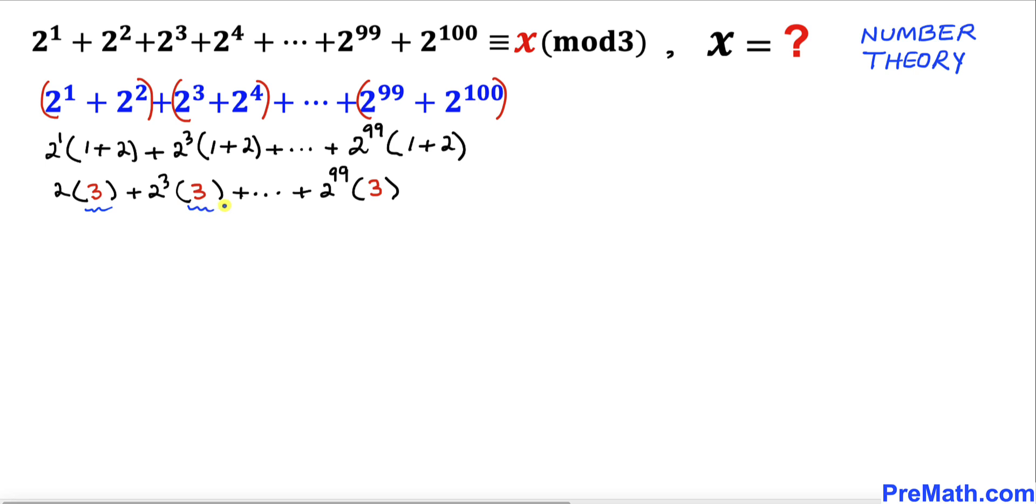Now we can see that this 3, this 3, and all the way this 3 is in common among all these terms. Therefore I am going to factor out 3, and inside the parentheses we are left with 2^1 + 2^3 + ... + 2^99.